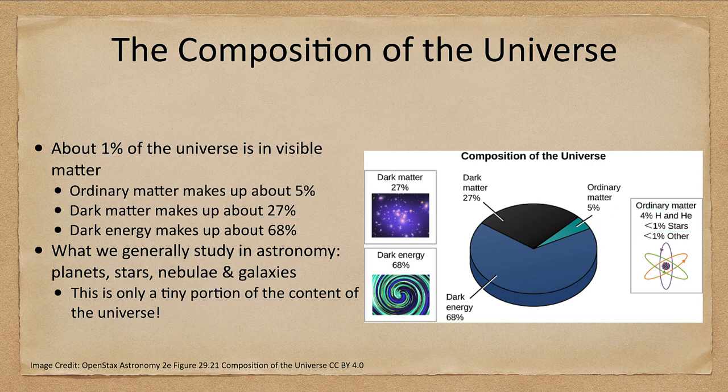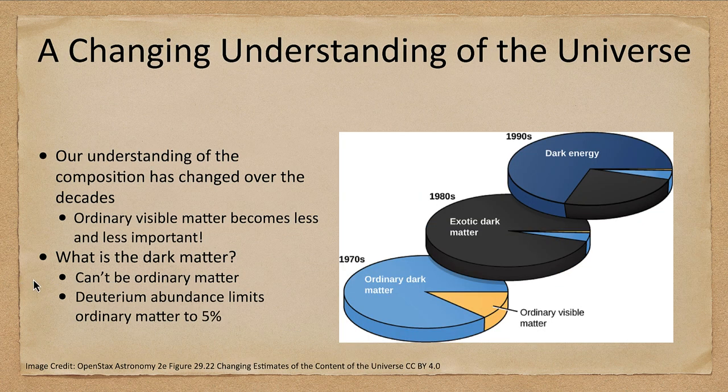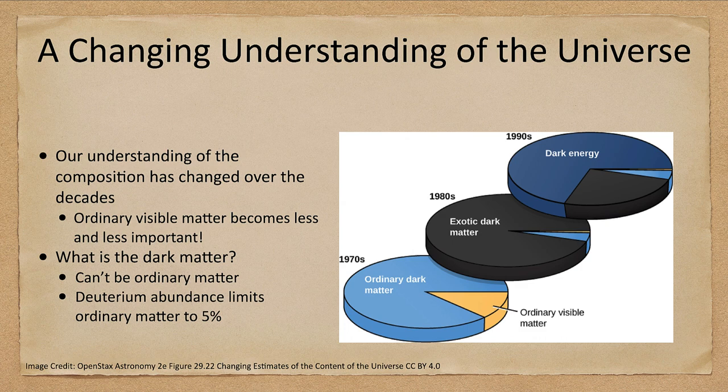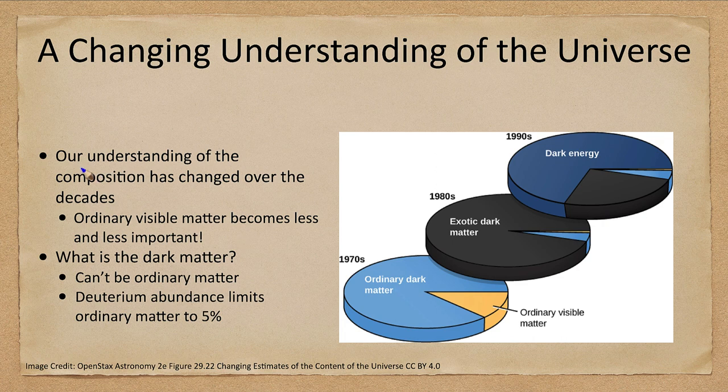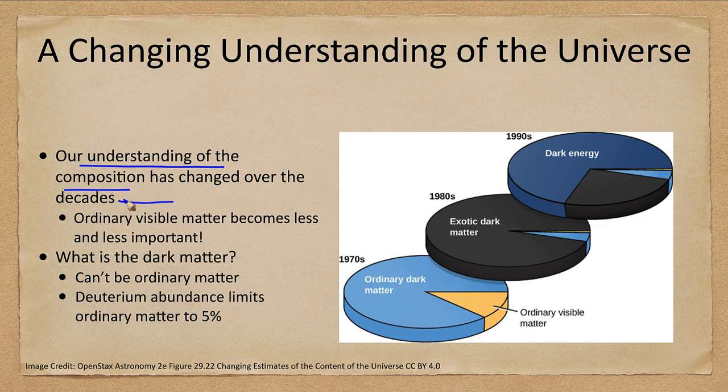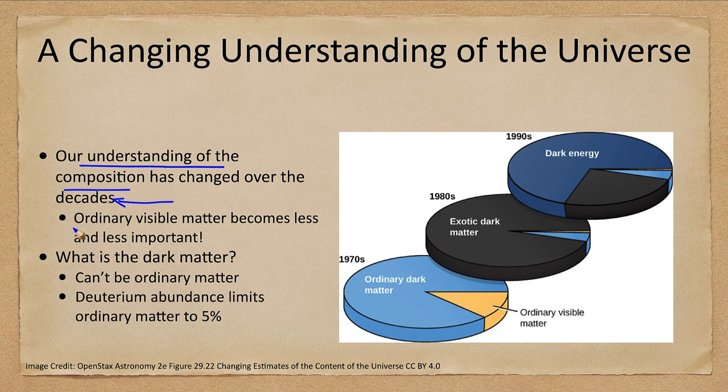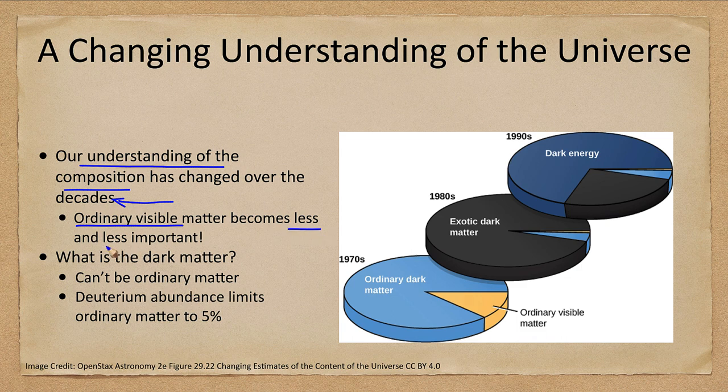How has our understanding of this changed over time? Here are a couple of charts showing what we looked at from the 1970s through 1990s. Our understanding of the composition of the universe has changed over the decades. Of course, the universe's composition has not changed. We're just still starting to learn more about it.